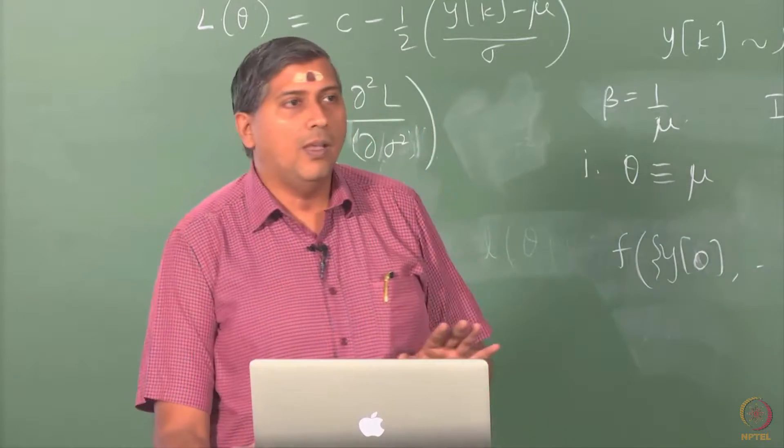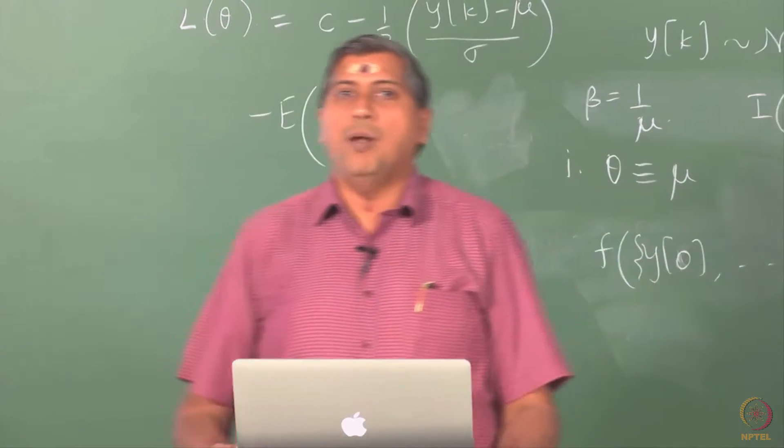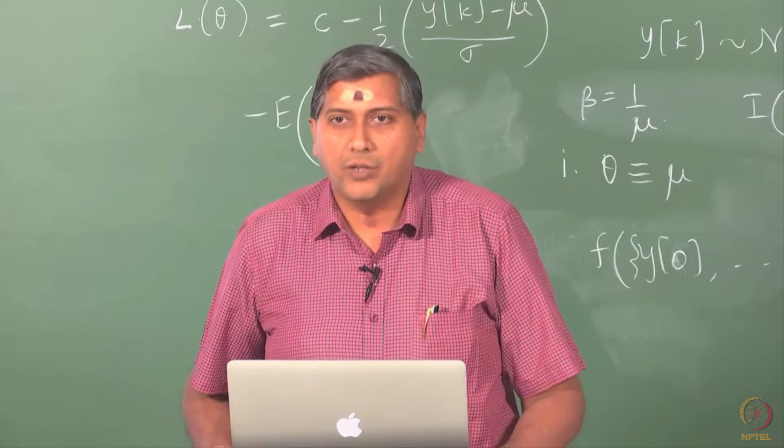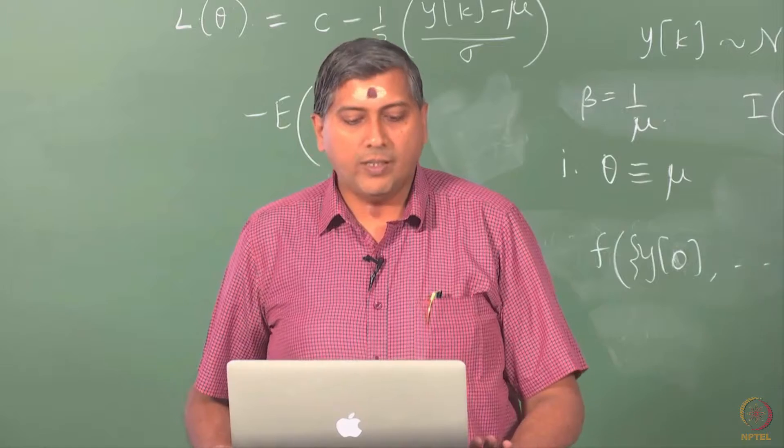For example, you take the sample mean. We have already shown that the sample mean is an unbiased estimator. How do you show that? You start with the expression for the estimator. What is the estimator? 1 over n Σ yk, and suppose I want to ask whether this estimator is biased or not.